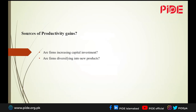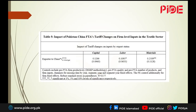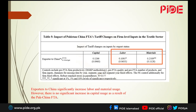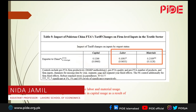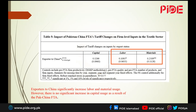What are the sources of productivity gains? There are productivity gains but they're limited. So we explore why those gains are limited. Is it because firms are not investing? Are they producing more products? For firms that do export to China, we see that they do increase their labor and material usage, but we do not see any significant increase in capital investment as a result of the Pakistan–China FTA. These firms exporting to China are not investing. This could be a major reason our results differ from other countries — literature normally shows that firms with market access do indulge in R&D and do invest, but we do not see this here.